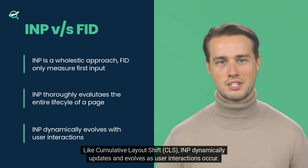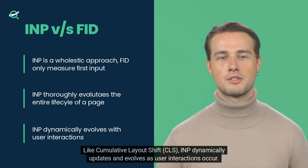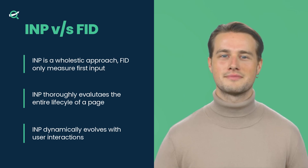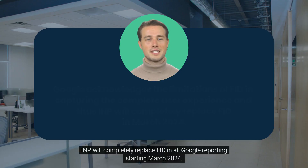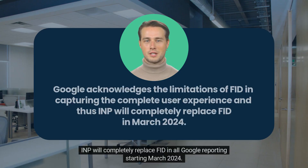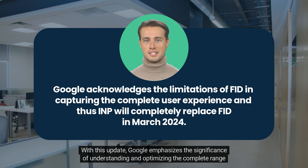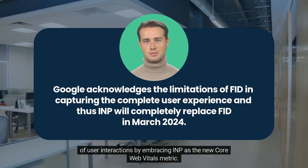Like Cumulative Layout Shift (CLS), INP dynamically updates and evolves as user interactions occur. INP will completely replace FID in all Google reporting starting March 2024. With this update, Google emphasizes the significance of understanding and optimizing the complete range of user interactions by embracing INP as the new Core Web Vitals metric.